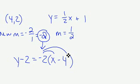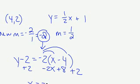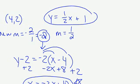we're going to distribute, simplify, and solve it so that y equals negative 2x plus 10. And that line is perpendicular to our original line, so this is my answer.